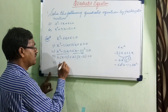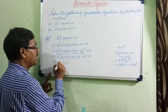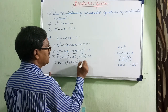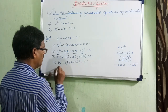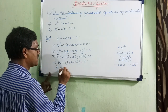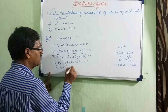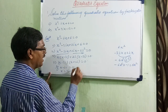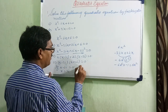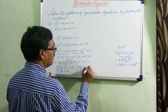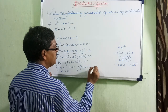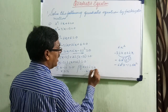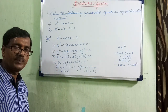So x minus 3i into x plus 2i is equal to 0. If x minus 3i equals 0, then x is equal to 3i. And if x plus 2i equals 0, therefore x is equal to minus 2i. This is the solution set.